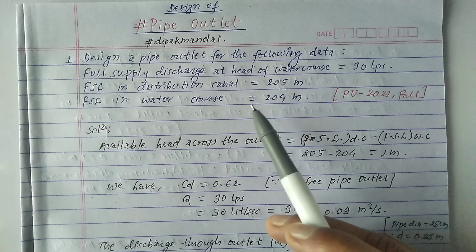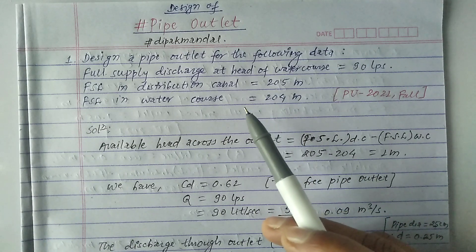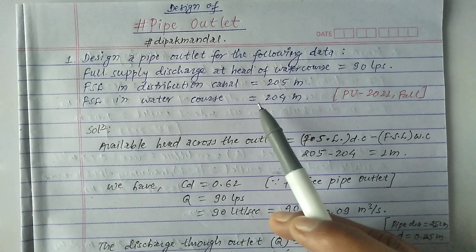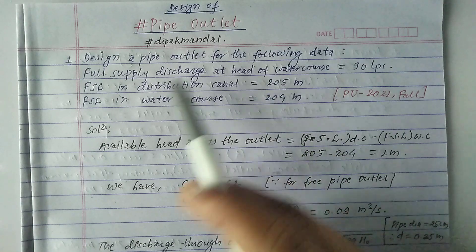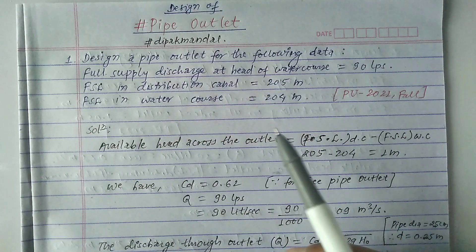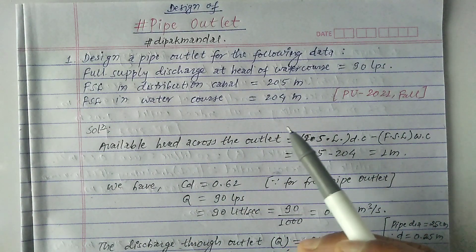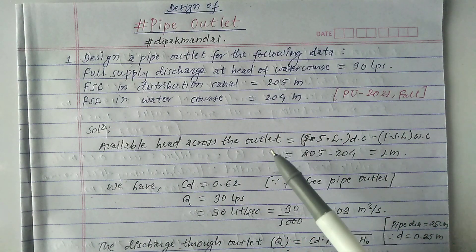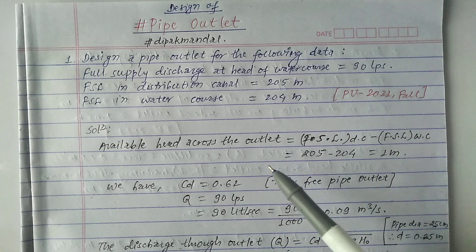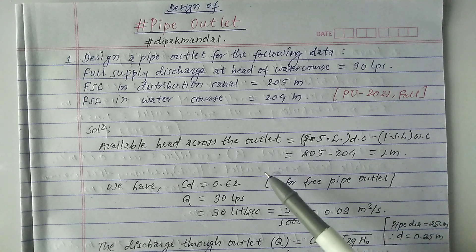So basically that is the question, and now we have to design the canal pipe outlet with the help of this given data. Let's see the solution.